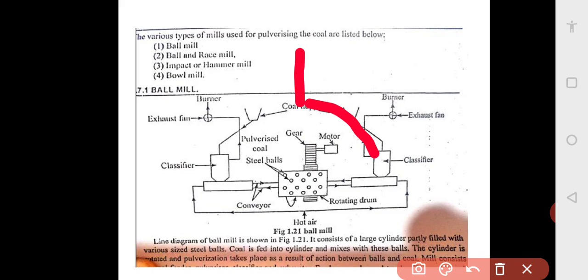From the classifier, it comes through the conveyor to the drum. This drum is rotated by gear and motor arrangement. The coal comes from the hopper, goes to the classifier, and by the screw conveyor comes to the rotating drum. This rotating drum is like a steel drum with steel balls of various sizes inside, and this drum is rotated like a washing machine drum.